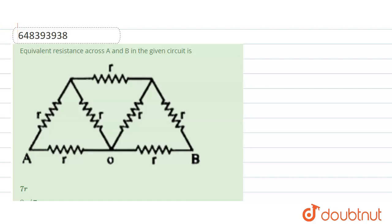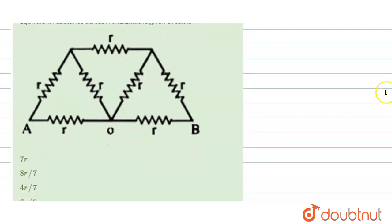Hello students, so the question says, find the equivalent resistance across A and B in the given circuit. A circuit is given, we need to find the equivalent resistance between the points A and B.